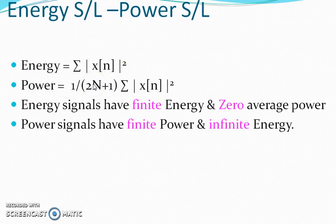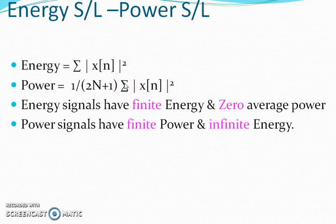Next, energy signals and power signals. The energy of a signal is determined by the summation from n equal to minus infinity of the magnitude of x(n) squared. This comes from the equation power = V × I; with resistance r = V/I, we can write V²/R or I²R. Considering resistance equal to 1 ohm, energy equals x(n) squared. Energy signals have finite energy and zero average power, while power signals have finite power and infinite energy.